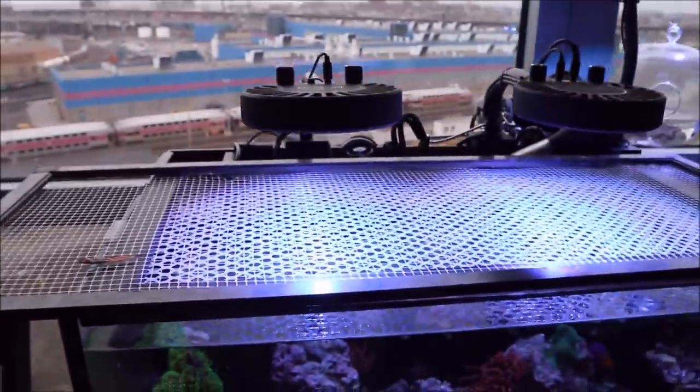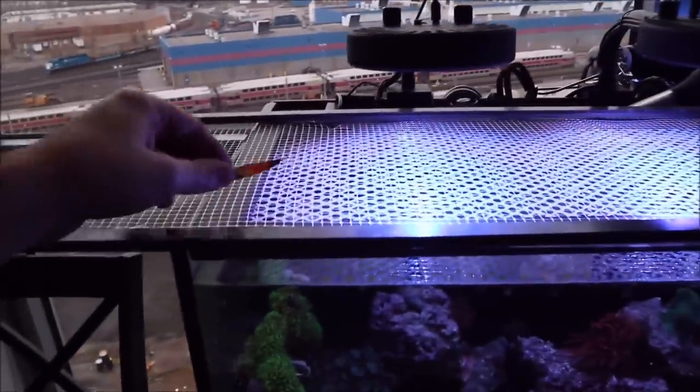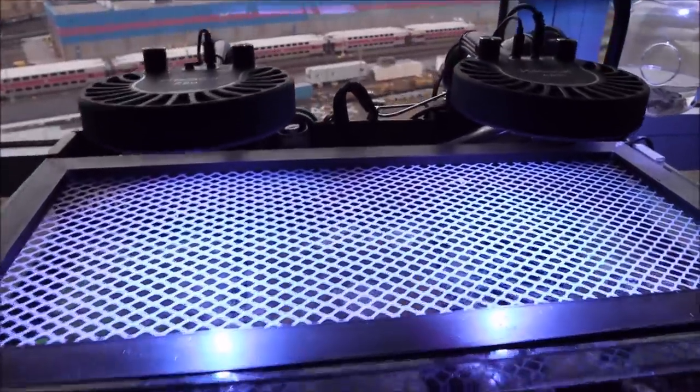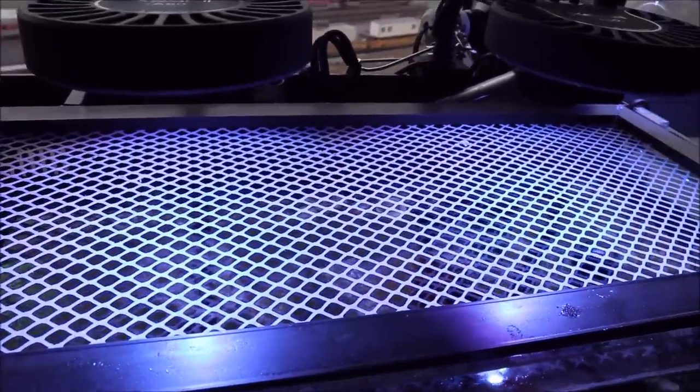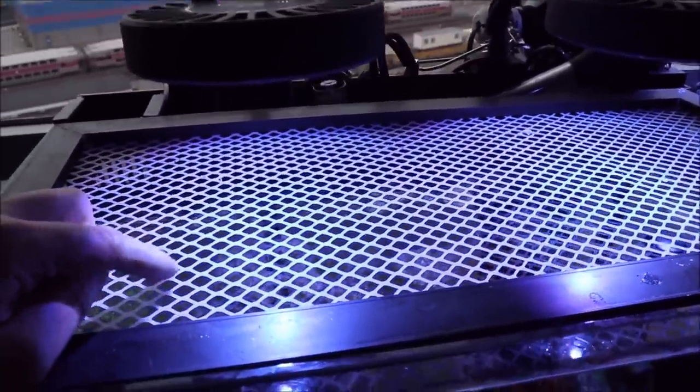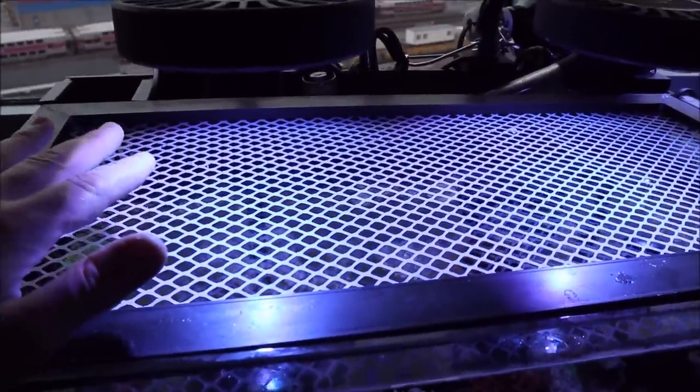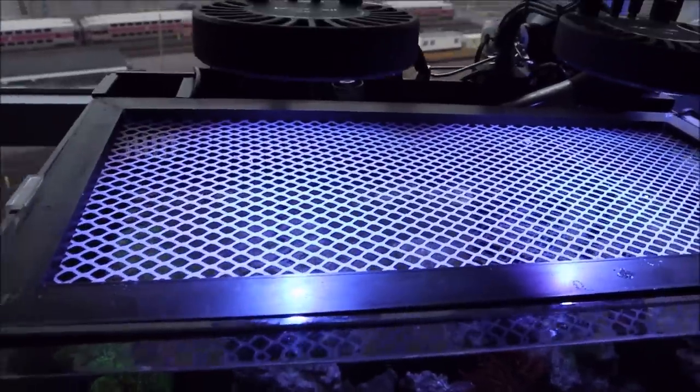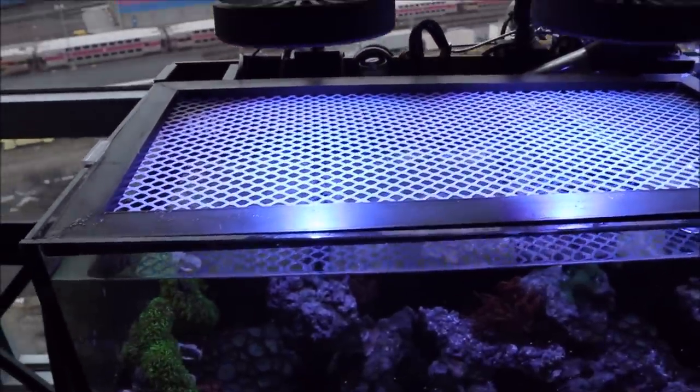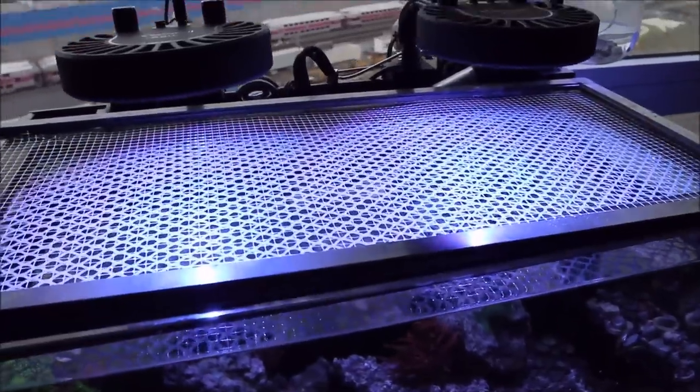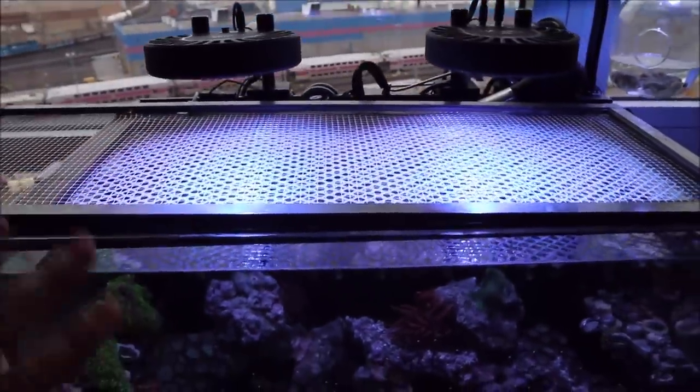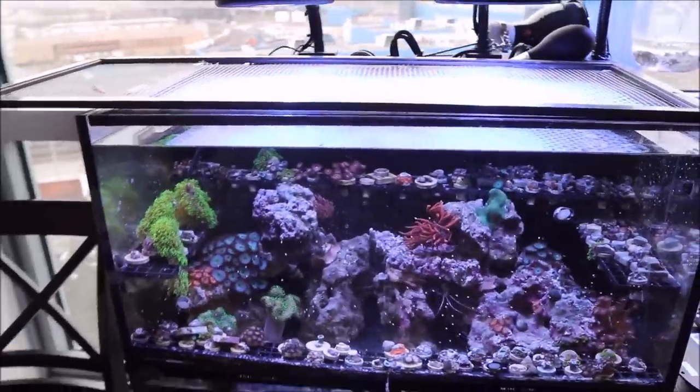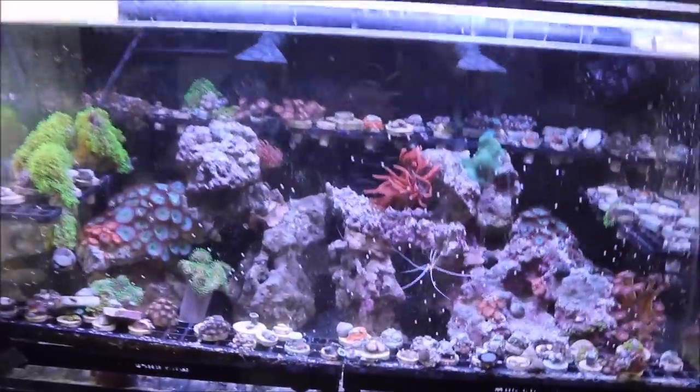You can see I have double screen nets on here right now to stop this from happening. What happened is he jumped straight through the nets. The holes on these nets on these nano tanks are actually quite wide and I'm a little surprised because it's a nano tank with probably small fish. These holes will not stop a fire fish from jumping out. I'm going to show you how I'm going to modify that in order to much better protect this tank from jumpers.